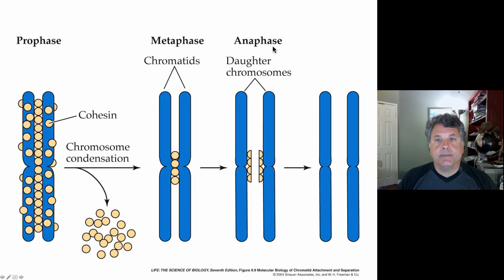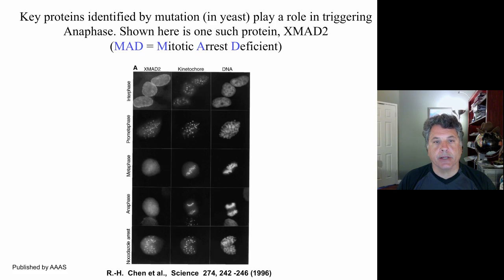Now yeast has been a wonderful model system to study the cell division cycle and mitosis as well, the mitotic part of the cell cycle. And we've learned much about the cell cycle from study of yeast. And this is a protein identified by a mutation called mitotic arrest deficient. It's a MAD protein.